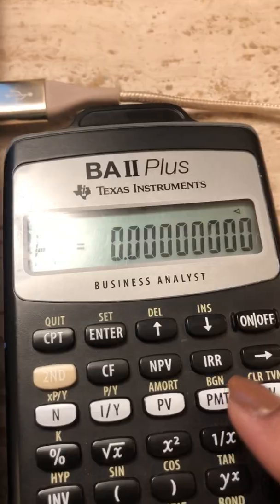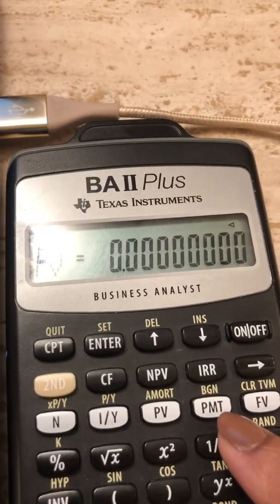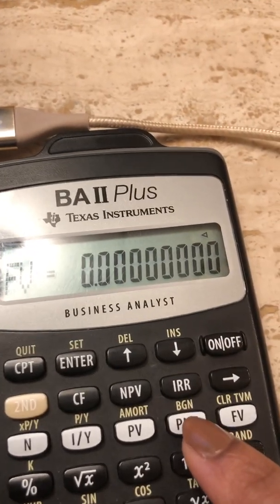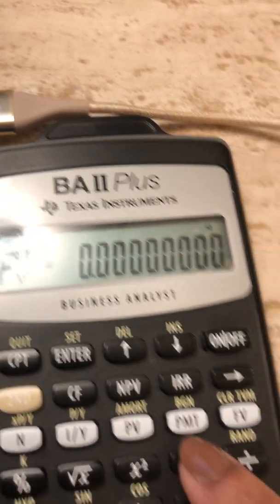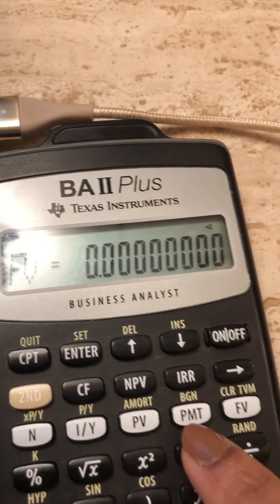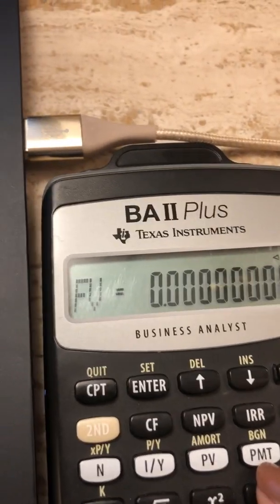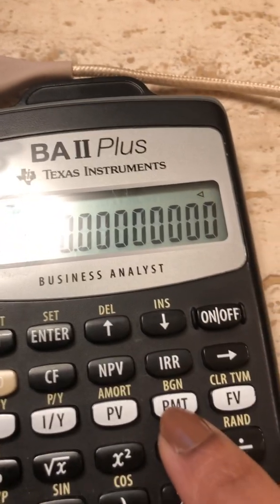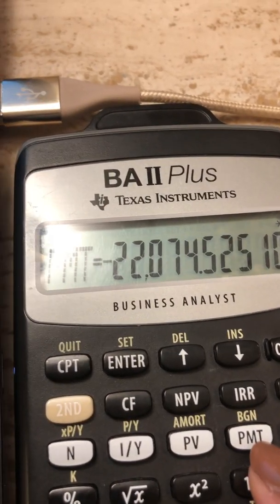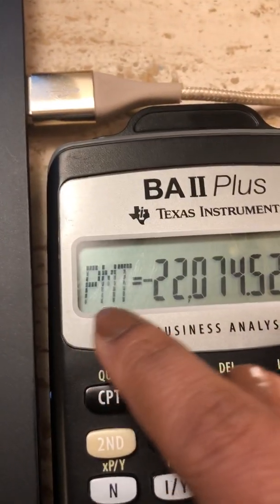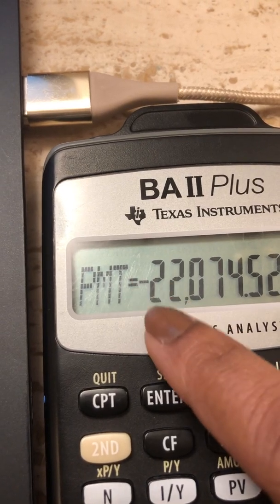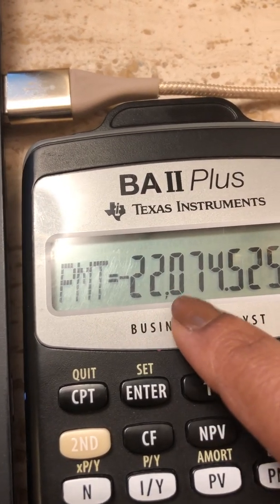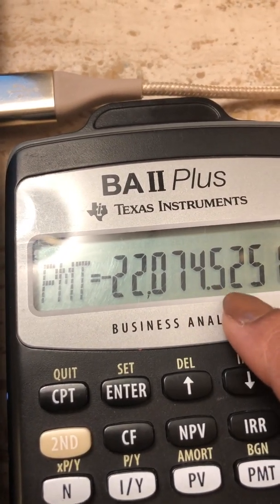So I need to compute the annual payment, which I need to make. So this is a regular payment I will be making for the next 20 years. Essentially, it is an annuity, or a payment which I need to compute. So hit compute, and then payment, which gives me an annual payment of minus 22,074.525.